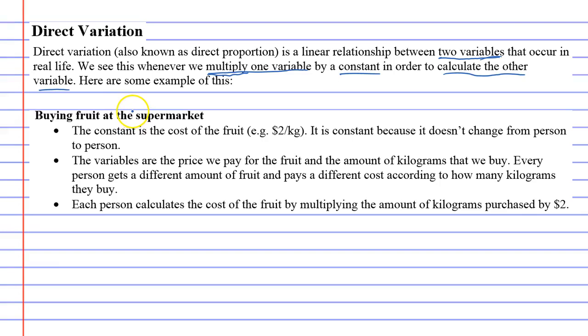When I buy fruit at the supermarket, there is what's called a constant, and the constant is the cost of fruit. For example, let's say the fruit is $2 per kilo. It is constant because it doesn't change from person to person. Everyone who goes into the supermarket on this day pays $2 per kilo. It is therefore constant because it does not change. The price of the fruit does not change.